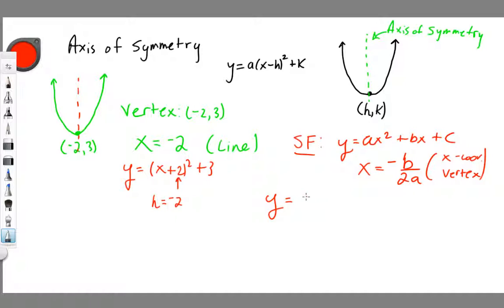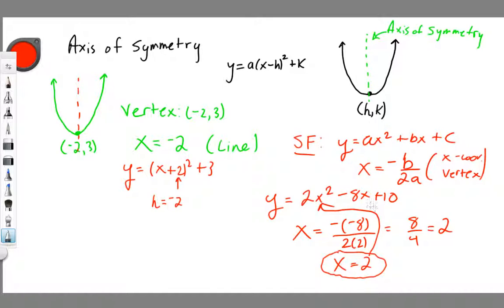y equals 2x² - 8x + 10. To find the x-coordinate of the vertex or the axis of symmetry, it's x equals negative of negative 8, so that's negative times negative 8, all divided by 2 times my a value, which is 2. That's 8 divided by 4, which equals 2. So my axis of symmetry is x equals 2. To find the y-coordinate of the vertex, I take this 2 and plug it back in for x.